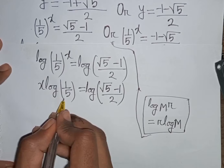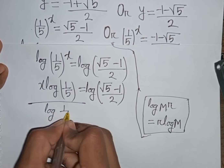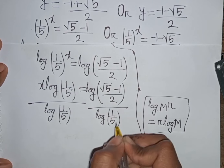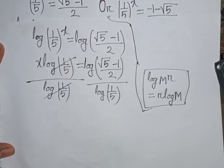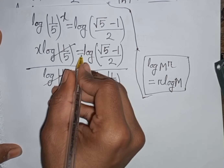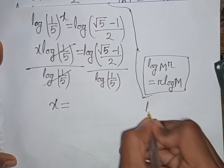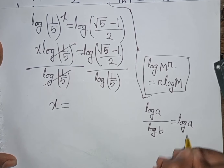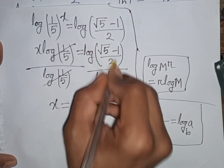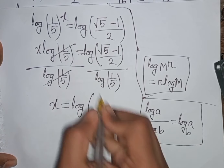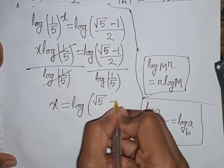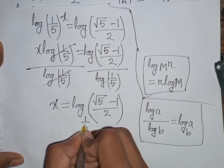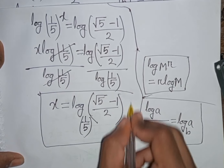We need the value of x, so we divide both sides by log(1/5). The log(1/5) terms cancel. Applying the formula log(a)/log(b) = log_b(a), we get x = log base (1/5) of ((√5 − 1) / 2). This is the final answer.